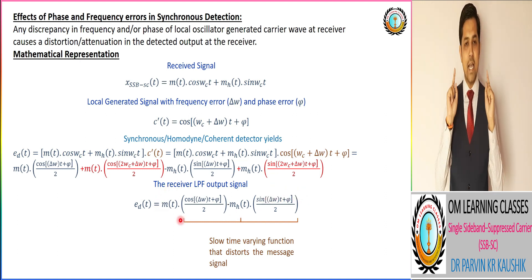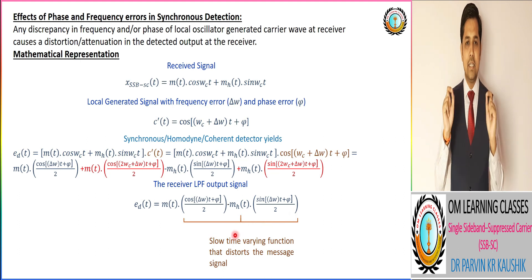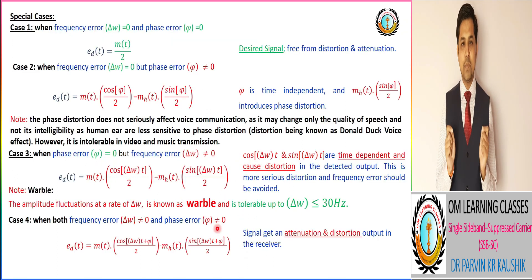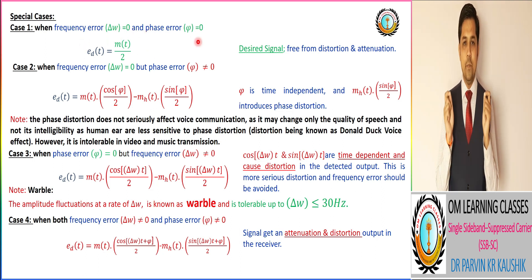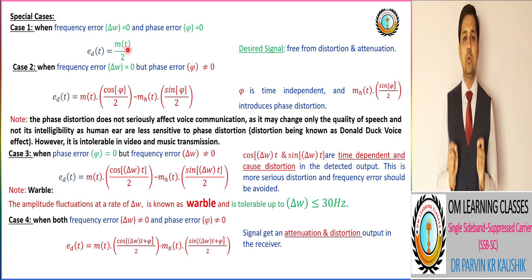In SSB-SC signal the detected output has two terms, unlike DSB-SC which has only one term. These two terms act as a slope and varying function that distorts the message signal. Similar to DSB-SC, we consider four cases. Case 1 is the desired signal case, in which there is no frequency error and no phase error — meaning the local oscillator at the receiver is perfectly synchronized in frequency and phase with respect to the transmitter. In this case, the EDT output is equal to m(t)/2, which is free from distortion and attenuation.